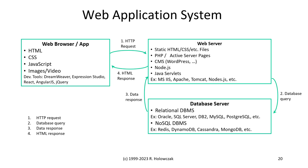The three-tier architecture also lends itself well to web applications. Here, the client is a web browser or an app running on a smartphone, programmed in HTML, cascading style sheets, and JavaScript, possibly including images and video. Development tools used for these include React, AngularJS, and jQuery.